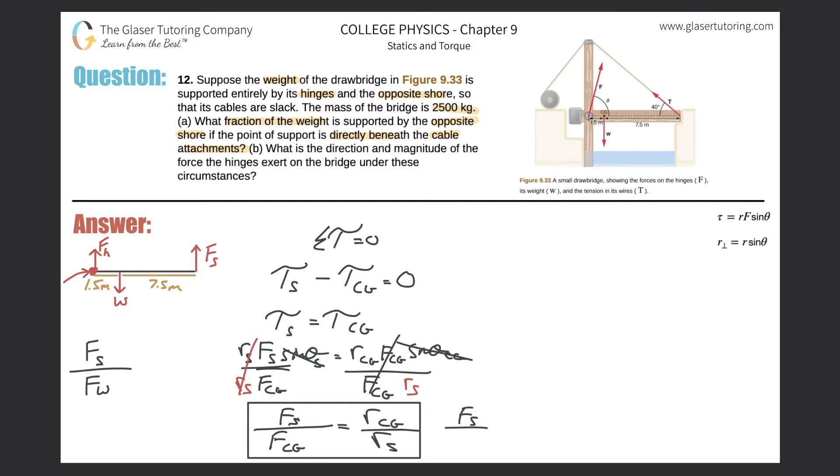So this is, this comes out to be F sub S over, I keep doing that, over CG is equal to the lever arm of the center of gravity, which was in my picture here, 1.5, and divide it by the radius. Well, yeah, the radius, but the lever arm for the force of the shore. And that whole, it would be that total distance, right? Which would be 1.5 plus 7.5. And what does that work out to be?